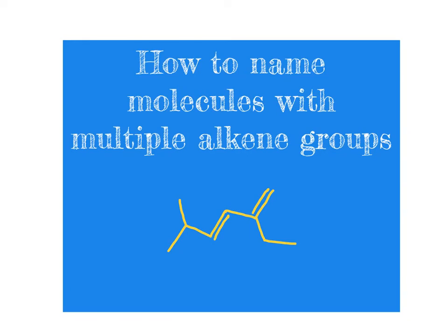The purpose of this segment is to discuss how to name molecules that have not just one alkene group, but more than one alkene group. This segment assumes that you have already mastered looking at molecules with single alkene groups and coming up with IUPAC names for those. If you haven't, you should go back to the previous video in the series and look at the IUPAC guidelines for naming alkene molecules. Here we're going to move along and look at naming molecules that have more than one alkene group, such as the molecule we see below.